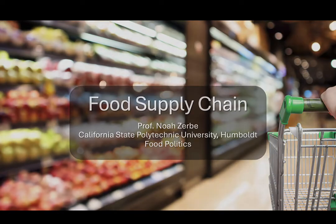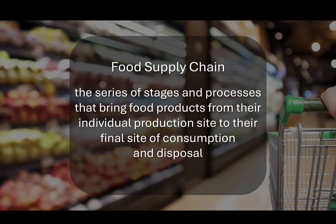At the simplest level, the food supply chain refers to the series of processes and stages that food products go through from their initial production to their final consumption and disposal. The food supply chain encompasses all of the activities, organizations, resources, and actors involved in transforming raw agricultural materials into finished food products delivered to the consumer. It can be divided into several key stages, each playing a crucial role in ensuring the availability, quantity, and safety of food.